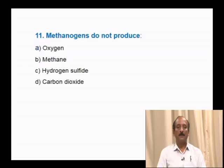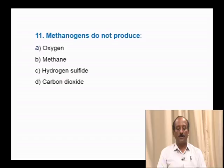Question number 11: Methanogens do not produce — oxygen, methane, hydrogen sulfide, carbon dioxide. Methanogen bacteria are used in the production of biogas, which is a mixture of methane, hydrogen sulfide and carbon dioxide, but does not contain oxygen. Hence, methanogens do not produce oxygen. The correct answer is option A.